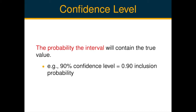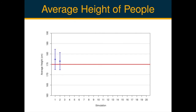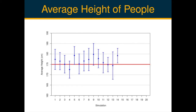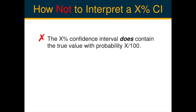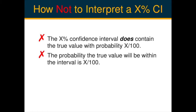Note that the probability relates to the interval, as the population parameter is considered fixed — it is the interval that varies with different sets of data sampled from the population. Also note that the probability is in reference to the interval before it has been constructed. We can demonstrate this property by simulation. Here I've simulated data from a population 20 times and each time calculated a point estimate and a 95% confidence interval for the average height of a large group of people, which in reality is 175 cm. Most of the time the interval includes the true value, but for simulation number 14 it doesn't — that interval is too high.